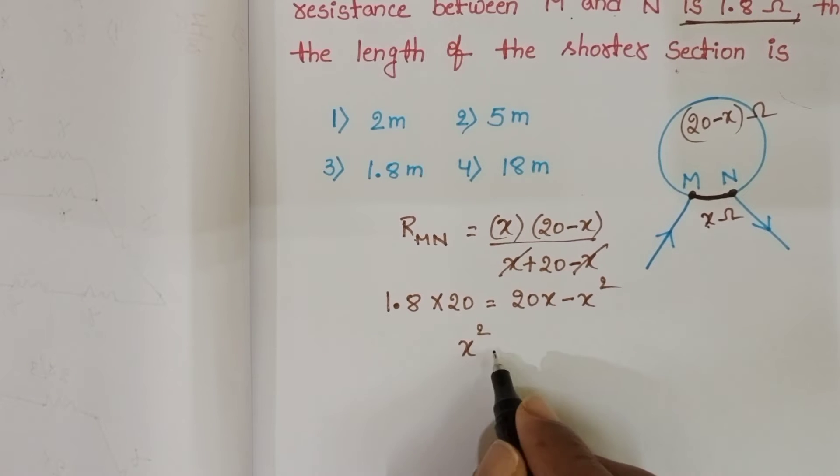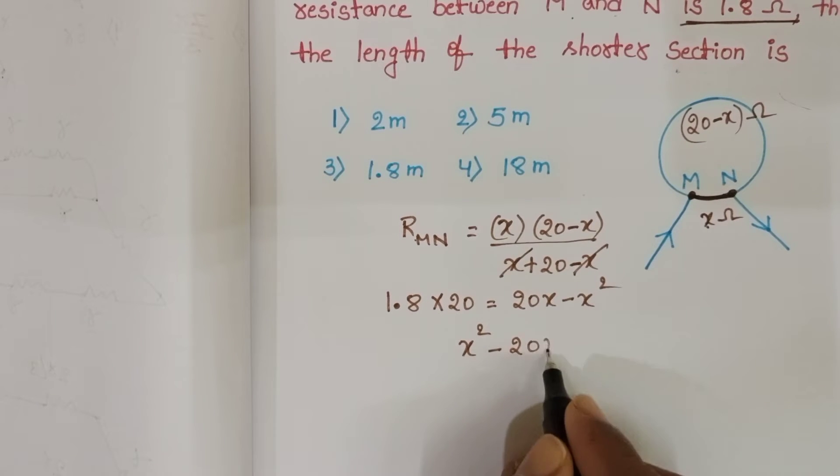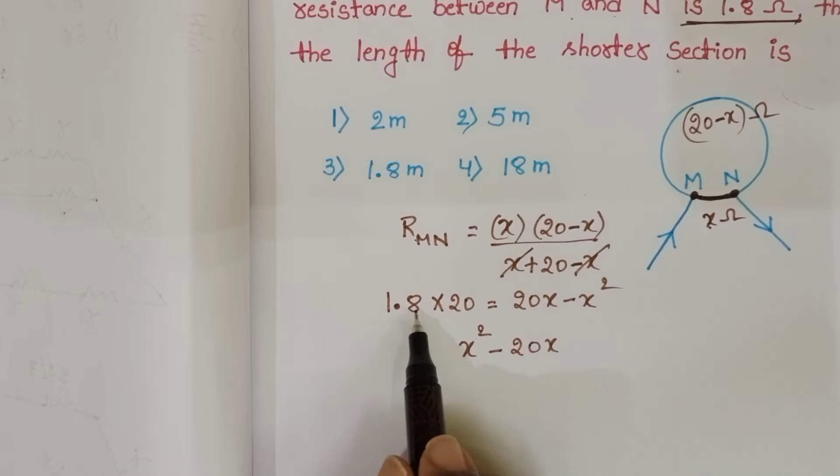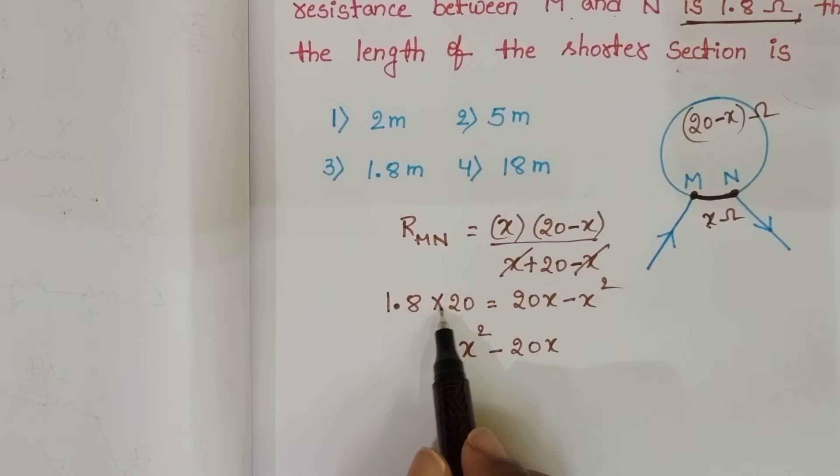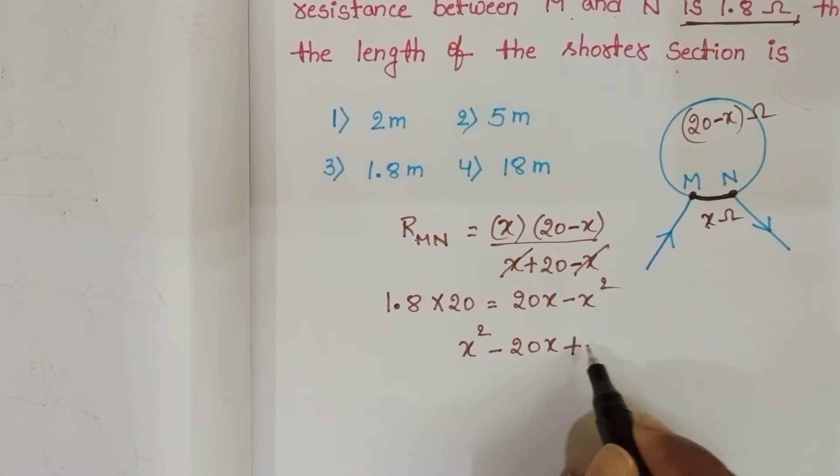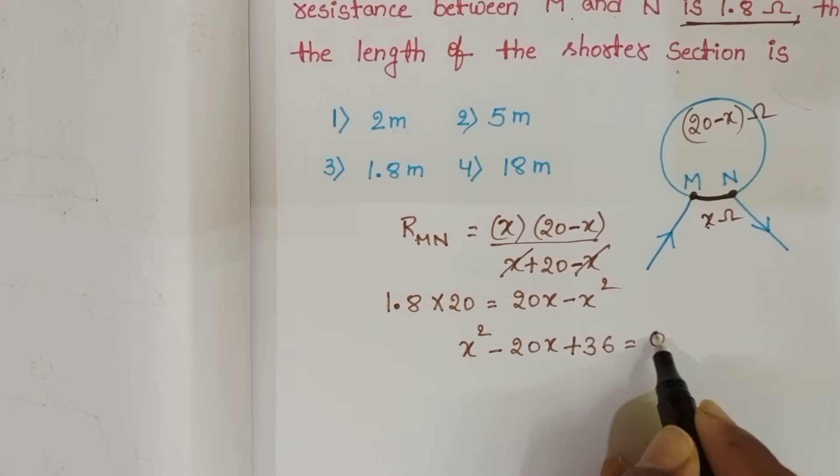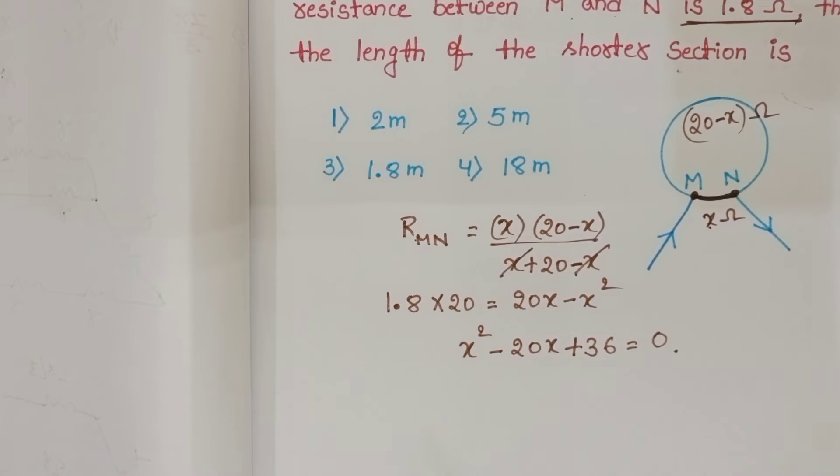And from this, X squared minus 20X. So 1.8 times 20 becomes 36, plus 36. Now from this find out the X value.